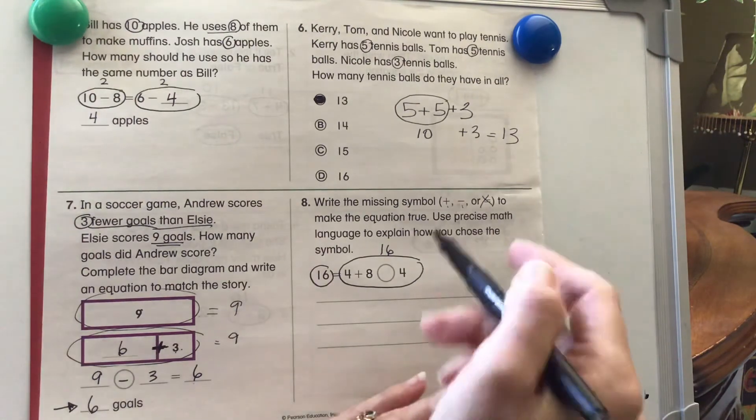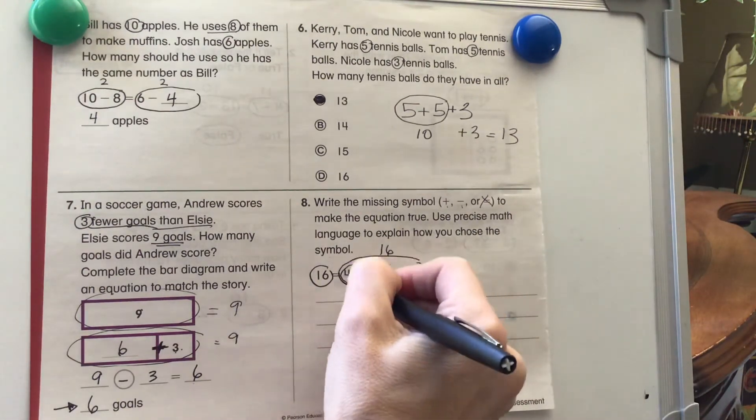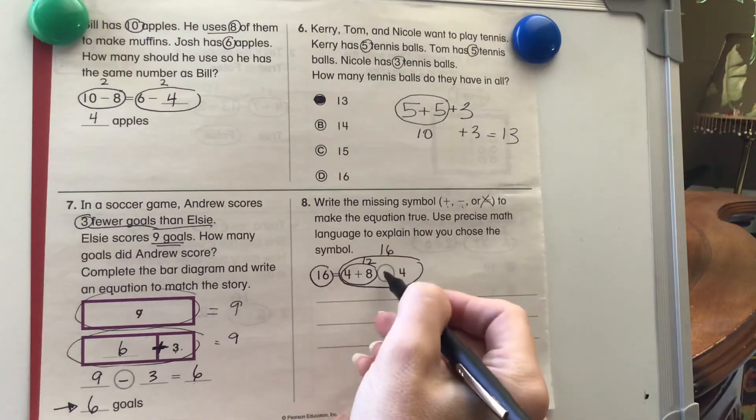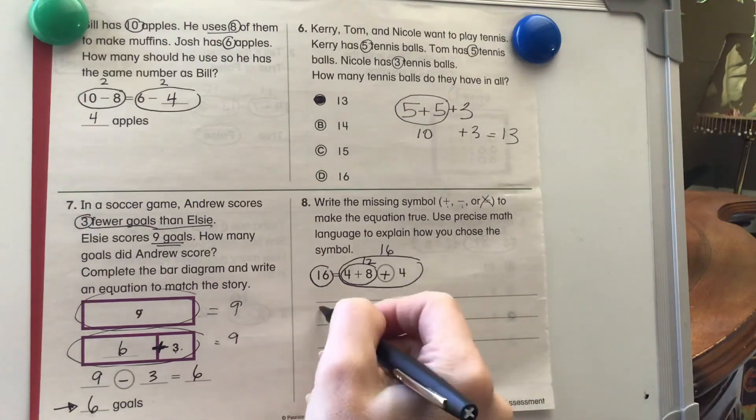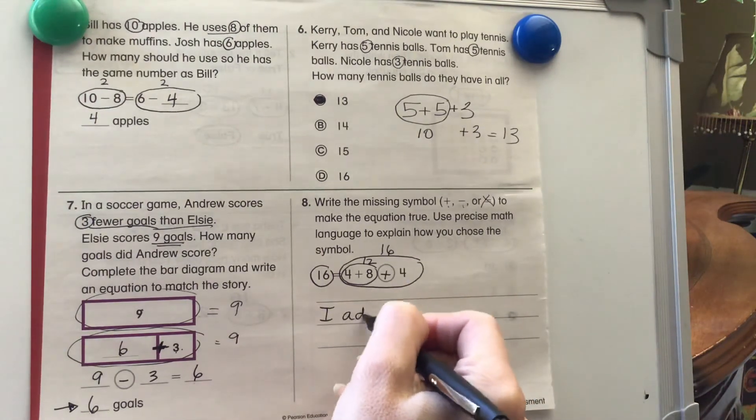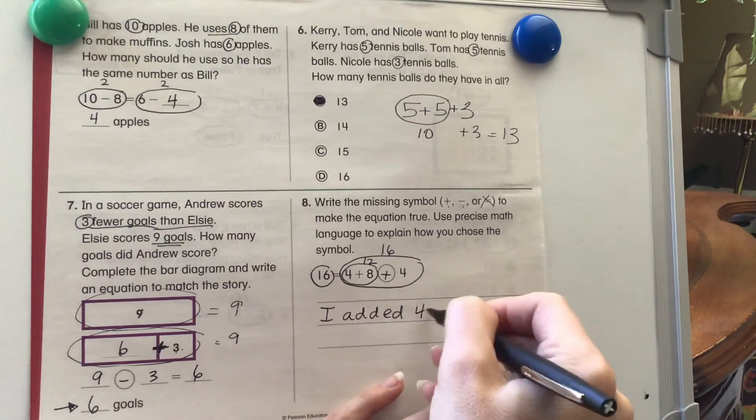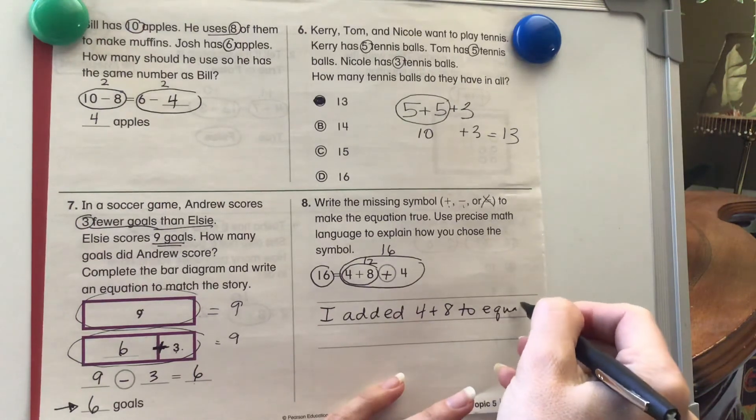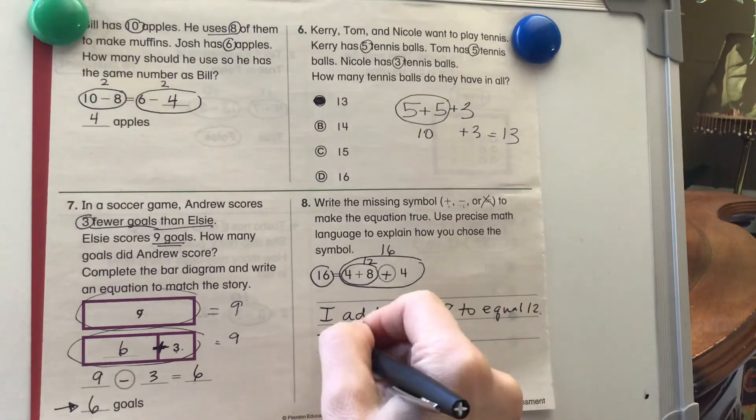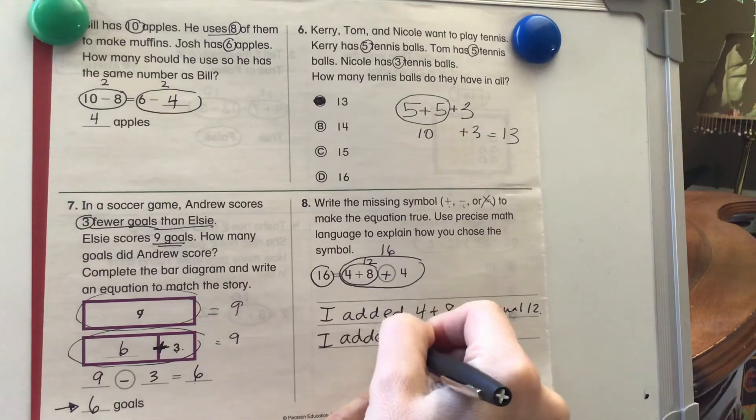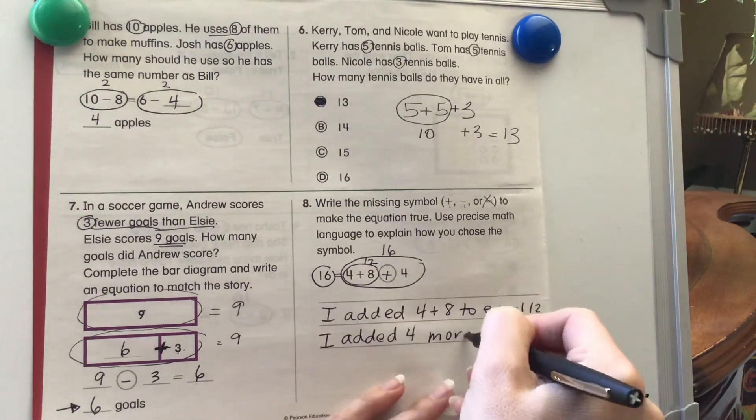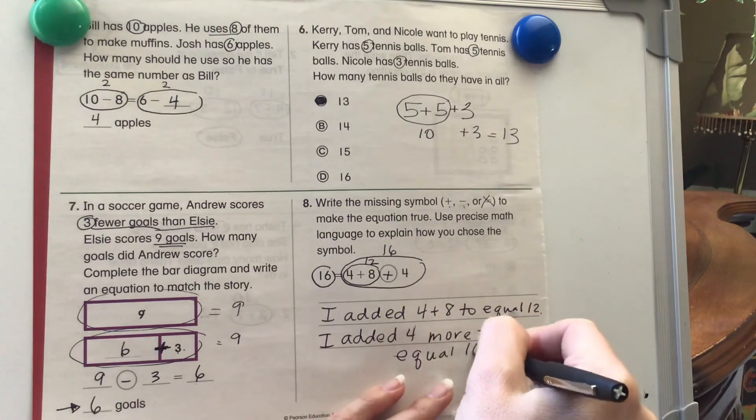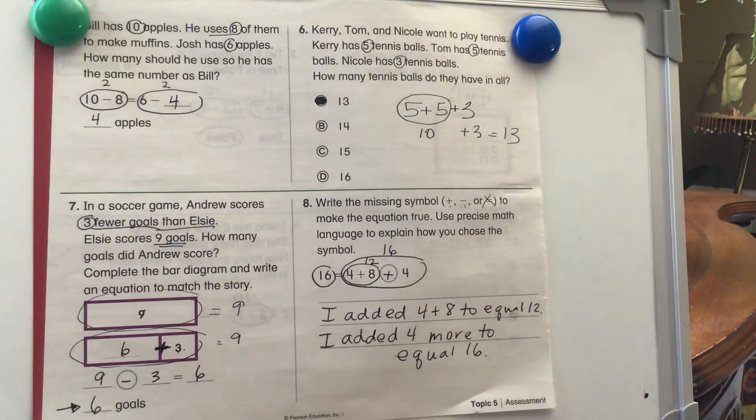All right. So what I'm going to do first is I'm going to say, first, I added 4 plus 8. I know 4 plus 8 is 12. I know that 12 plus 4 equals 16. So I can say, I added 4 plus 8 to equal 12. I added 4 more to equal 16. All right. Great job, everybody.